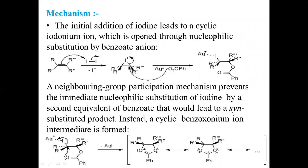Next, coming to the mechanism of the Prévost reaction. From previous classes we already know how the iodination reaction takes place on alkenes. The initial addition of iodine on alkenes leads to cyclic iodonium ion formation. This cyclic iodonium ion undergoes substitution by benzoate.